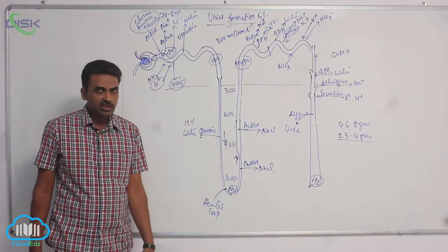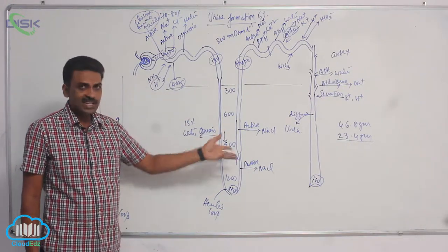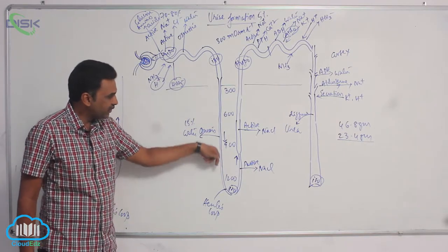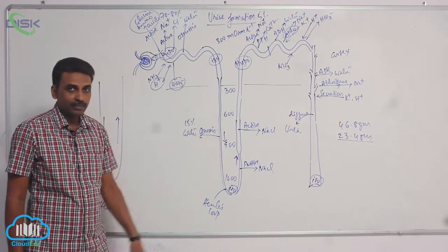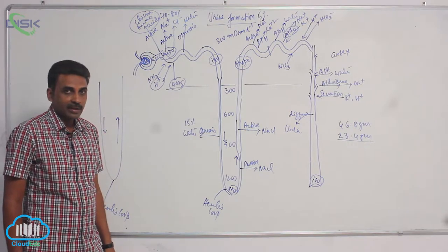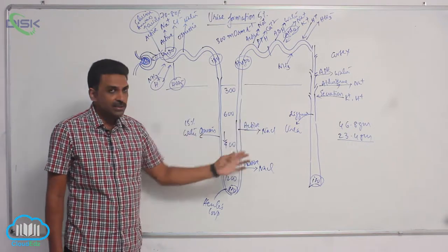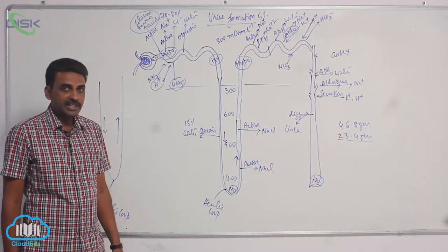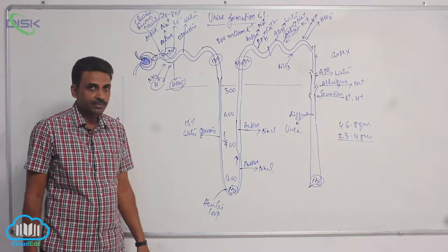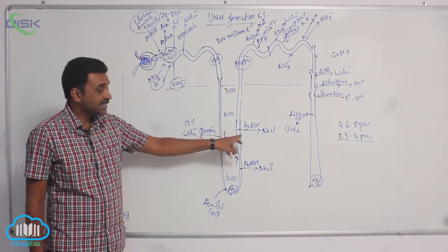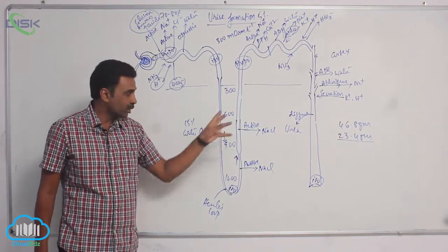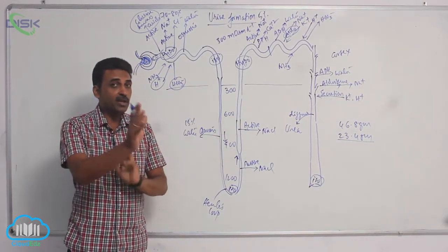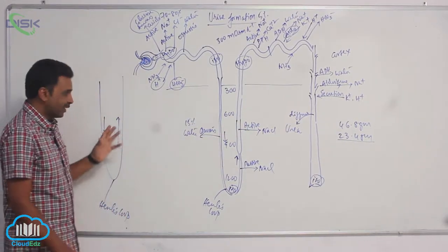If you observe the structure of the descending and ascending limb of the Loop of Henle: the descending limb is permeable to water, while the ascending limb is permeable to salts. Remember, the ascending limb is not permeable to water — it is only permeable to salts, and those salts are being actively pumped outside.